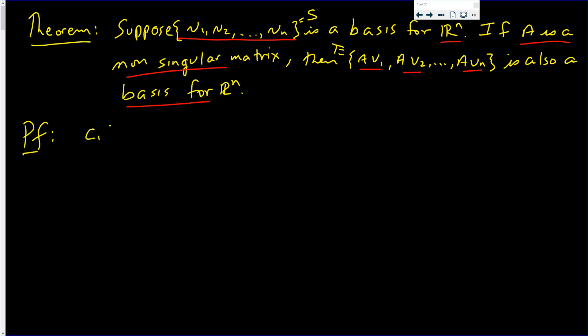So, what we do is, let's consider C1 times Av1. Suppose C1(Av1) + C2(Av2), all the way down to Cn(Avn) is zero. And if I can conclude that those coefficients are all zero, then, in fact, this set of vectors is linearly independent.